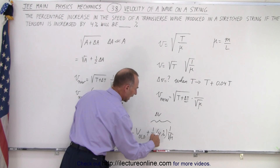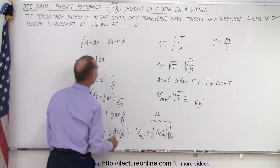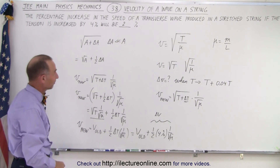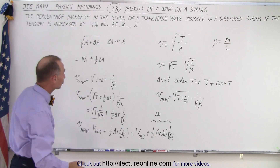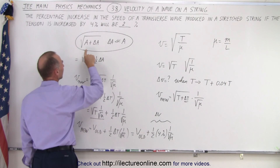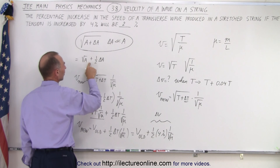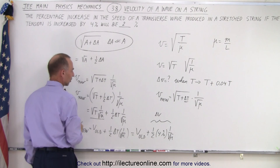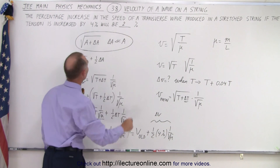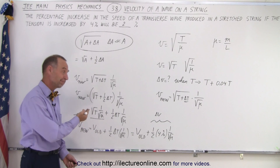It's going to be half of 4%, which is 2% of V. Therefore, we can say that the answer is 2%. Again, the trick is easy when we keep this in mind: we can always say that we take the square root of a number plus a very small change, and that can be written as the square root of the number plus half the change. Therefore, it'll be half the 4%. That means V will change by 2% if T changes by 4%. And that is how it's done.